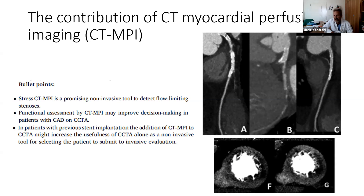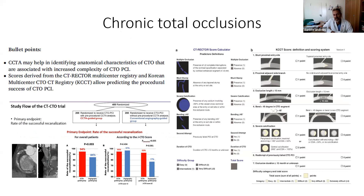The CTO chapter covers probably one of the applications already clinically introduced in practice. We have a couple of scores — the CT-RECTOR and the KCCT — that have been demonstrated to predict the procedural success of CTO PCI. CT-CA may help identify anatomical features of CTOs associated with increased risk and complexity. We also have in the literature prospective randomized trials showing that CTA allows increasing the success rate, particularly in more complex anatomies with higher J-CTO scores.